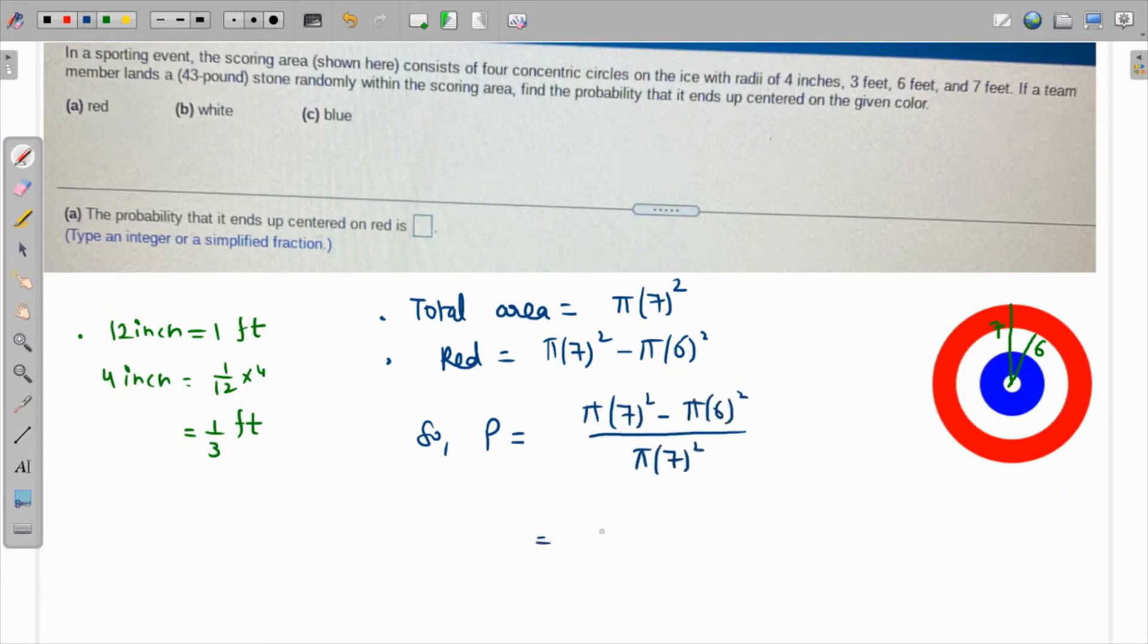π is cancelled from both sides. 7 times 7 is 49, 6 times 6 is 36 over 49. This will become 49 minus 36. So the answer is coming as 13 over 49.